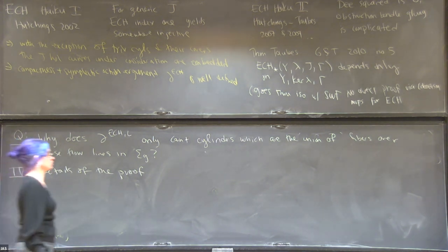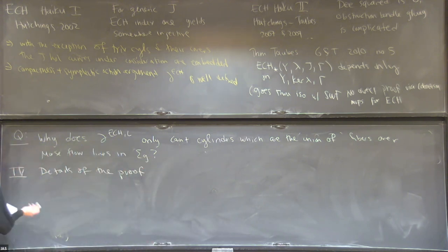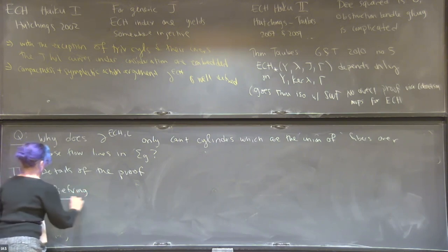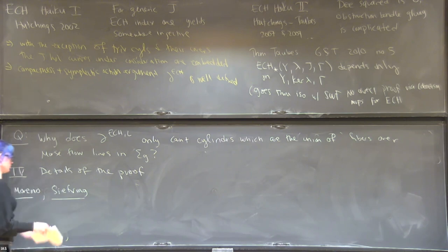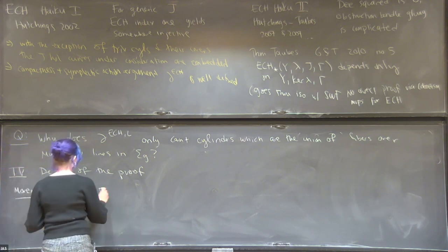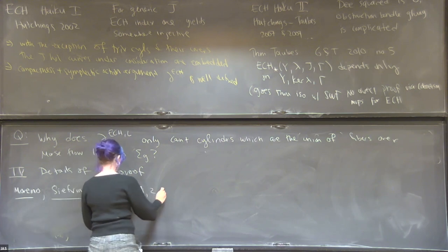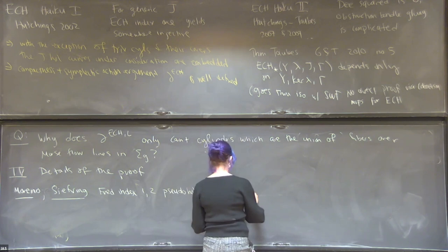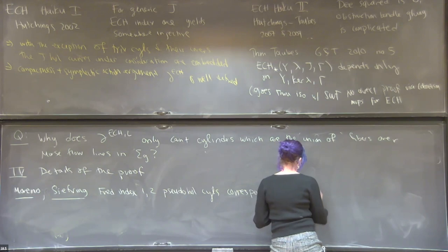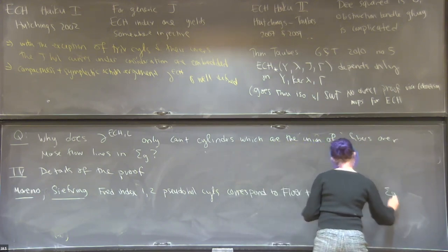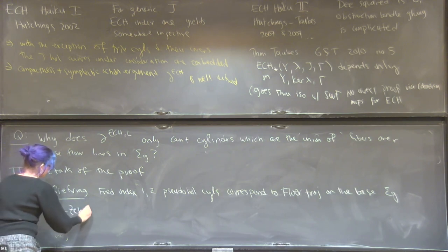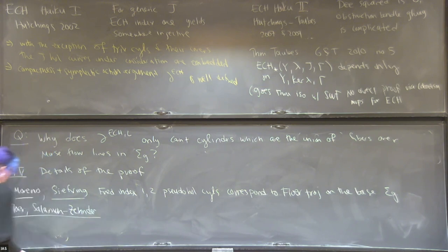Augustine generalized a construction by Siefring to hold in pre-quantization bundles — Siefring did it for trivial S1 bundles and stable Hamiltonian structures. This says that Fredholm index 1 and 2 pseudo-holomorphic cylinders correspond to Morse flow trajectories. Then the classical results of Floer, Solomon and Zehnder say that Floer trajectories in a symplectic manifold which is monotone... Chris Wendl gets upset when people call his results classical, but it's okay to say classical results due to Floer, Solomon and Zehnder at this point.